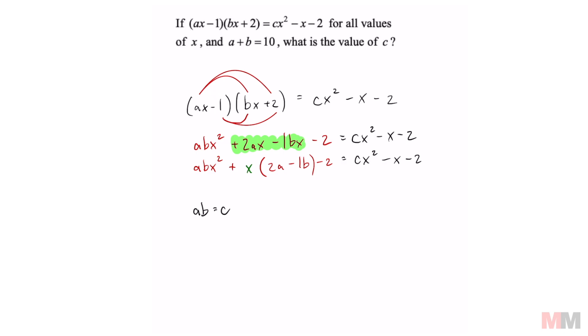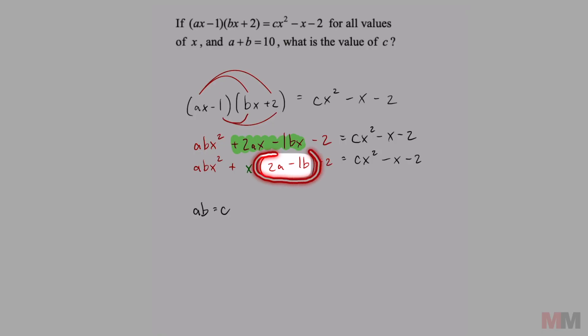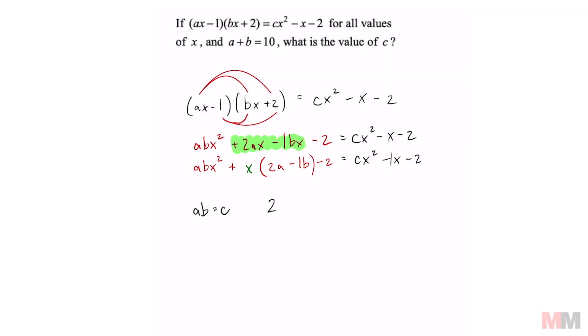We can also write this statement right here. 2a - 1b equals the coefficient of my x term, and if that doesn't have a number it's a 1. So we can say 2a - 1b equals negative 1, and negative 2 equals negative 2. We don't got to write that one down.